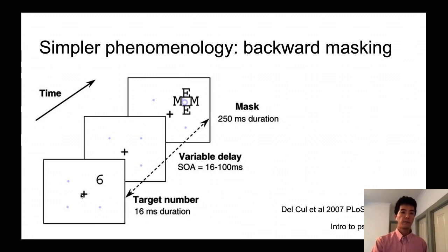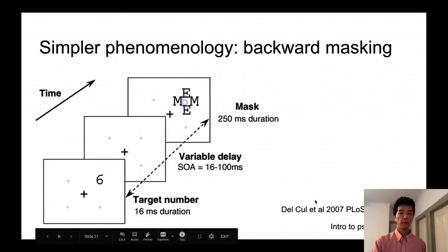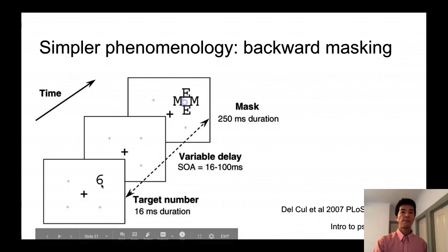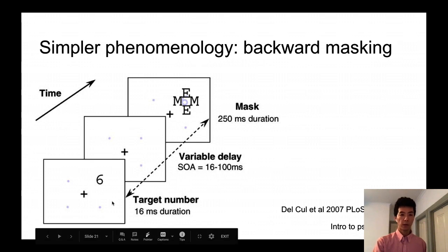In this case, in the experimental paradigm presented by Del Cow in 2007 paper, subjects were asked to fixate on this center cross. And then the number appears in one of the four quadrants in a random location.